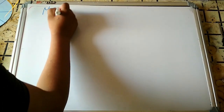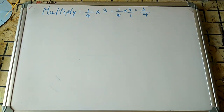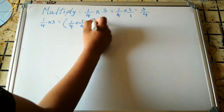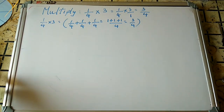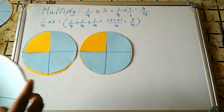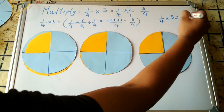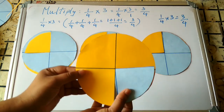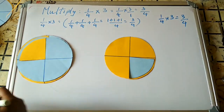Now let us do multiplication: 1/4 × 3. In multiplication of fractions, numerator multiplies by numerator and denominator by denominator. So 1 × 3 = 3 and 4 × 1 = 4, giving 3/4. Alternatively, 1/4 × 3 equals 1/4 + 1/4 + 1/4 = 3/4. In the activity, three circles each showing 1/4, when added together, give 3/4.